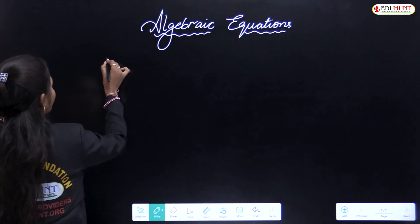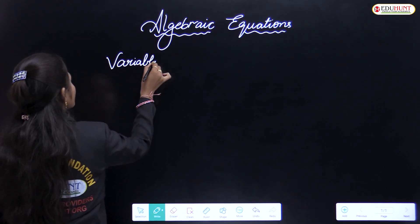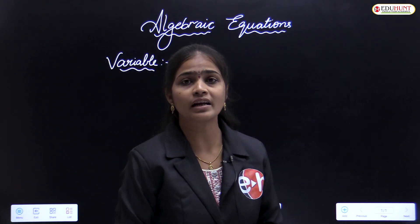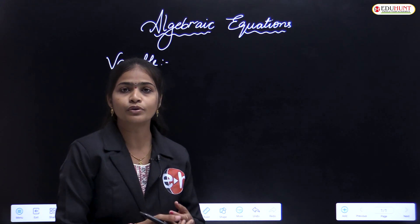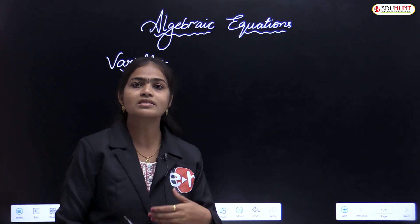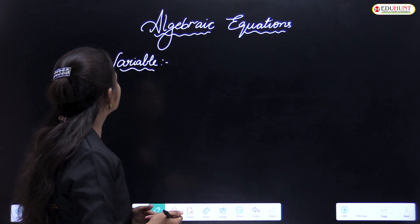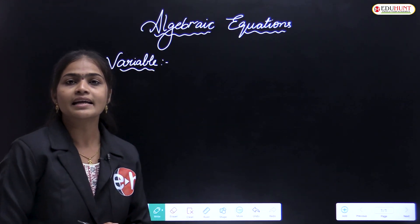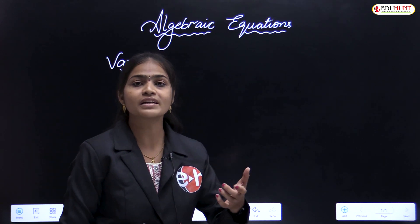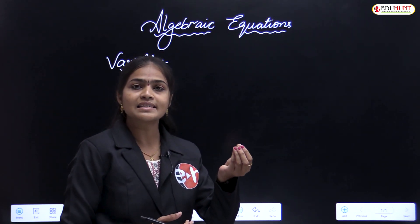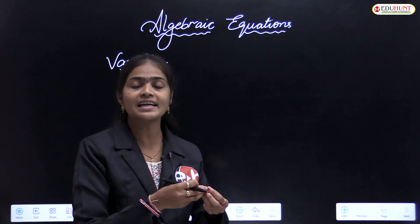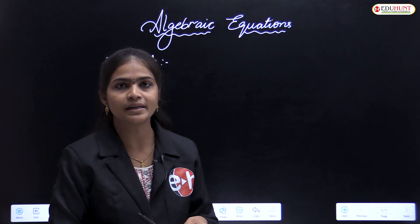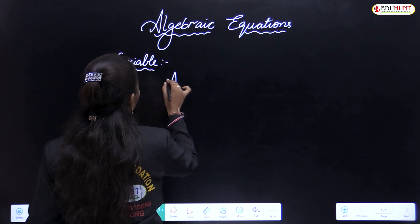The first term is variable. Why are we starting with variable when the heading says algebraic equations? Because without a variable there is no algebraic equation. A variable means a symbol which can take any value of a certain set — it doesn't have any particular fixed value.